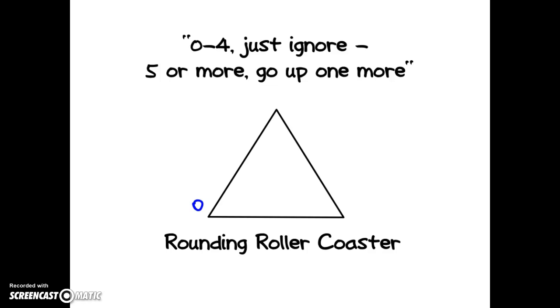First you'll see the numbers one, two, three, and four on the left and five, six, seven, eight, and nine on the right. You're told to round down if it's from zero to four or up if it's from five to nine.